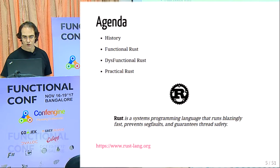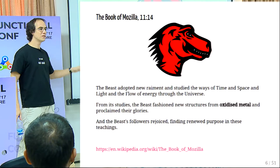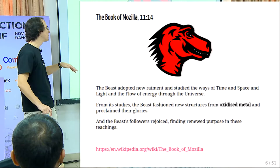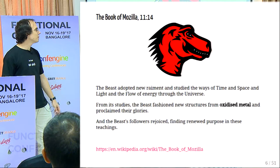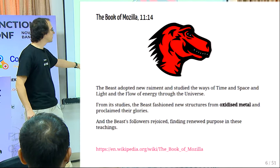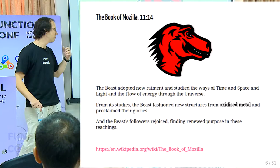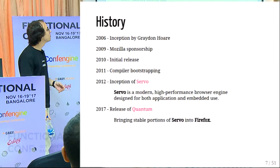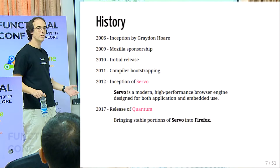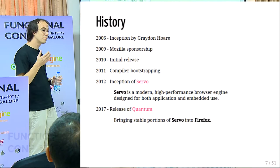First, just a little quote. Maybe some of you know the Book of Mozilla — it's an Easter egg hidden in Firefox that tells the story of Firefox. A new entry was added about two weeks ago describing that Firefox is now using Rust internally. In 2006, the original author of the language started hacking on it in his spare time as a hobby project. In 2009, Mozilla decided to sponsor the project, and the first release happened in 2010.